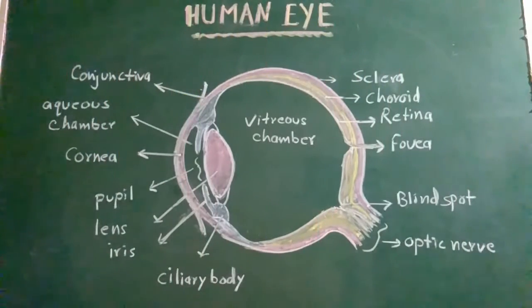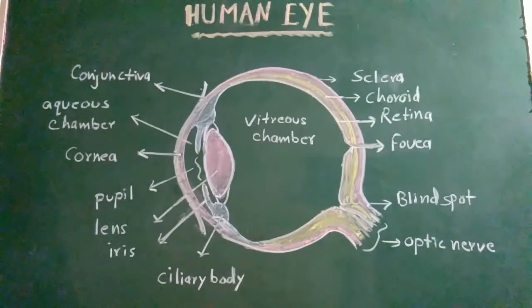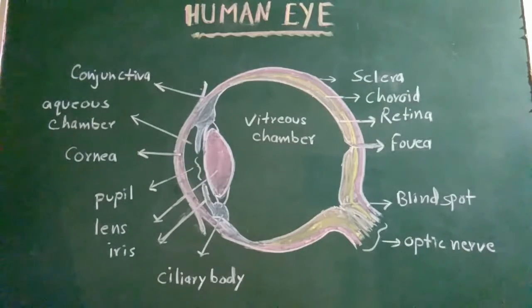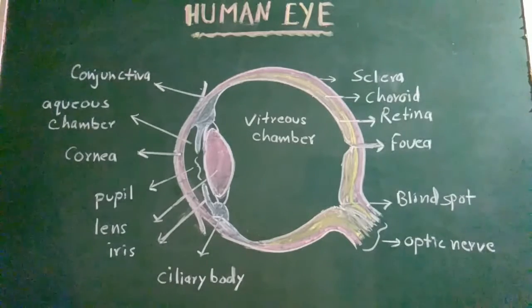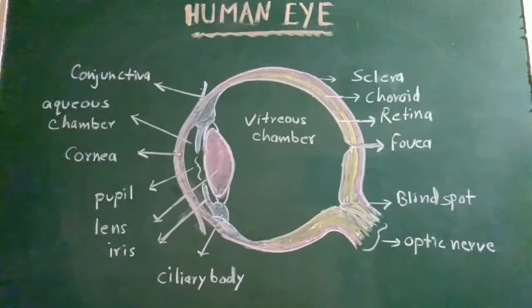Here is another property of the human eye that is known as accommodation. Accommodation is the reflex mechanism by which the focus of the eye changes to make the images of distant and near objects sharp on the retina.